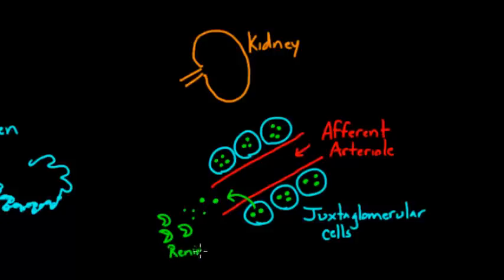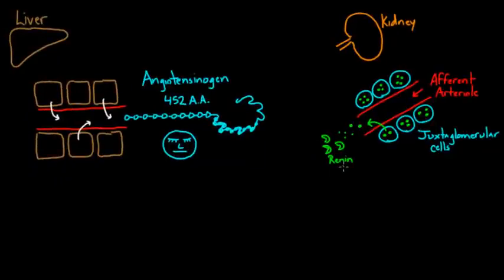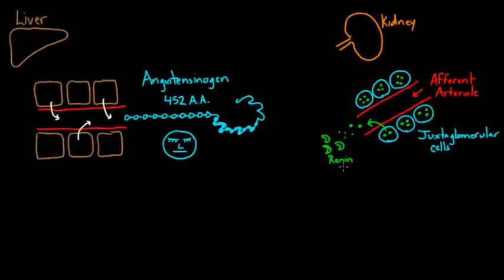And these are proteins that act at a distant site. And so anytime you have proteins that act on cells that are far away, we call those hormones. And so these peptide or protein hormones are basically going to work on cells far away. And so if the renin is floating around in the blood, and the angiotensinogen is floating around in the blood, they might meet up.